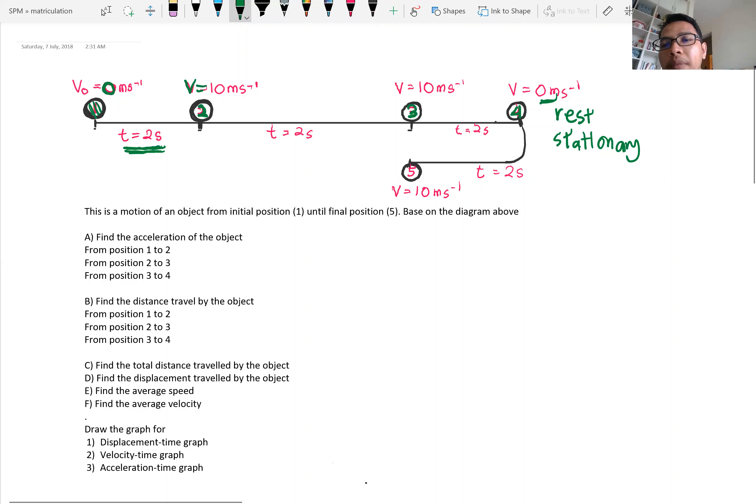Then it moves back, moves back to position 5 but in the different direction. So this is the motion of object, the velocity change and surely the acceleration change and the displacement or the distance also change.